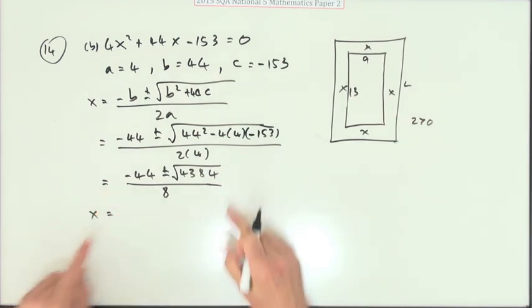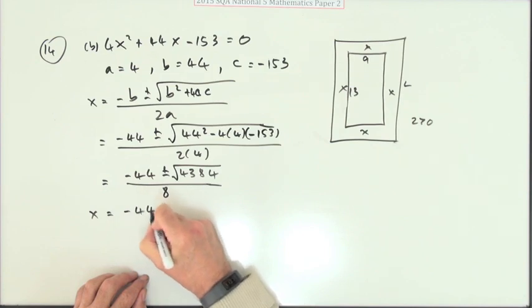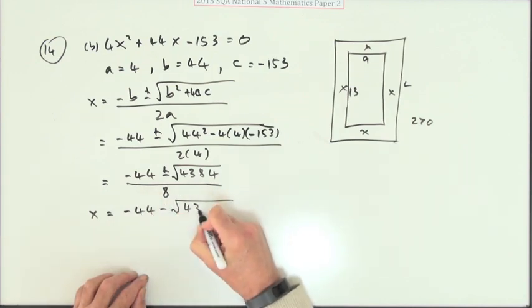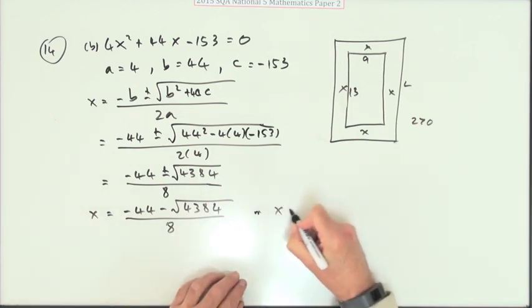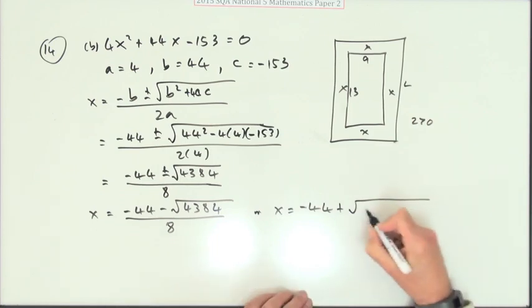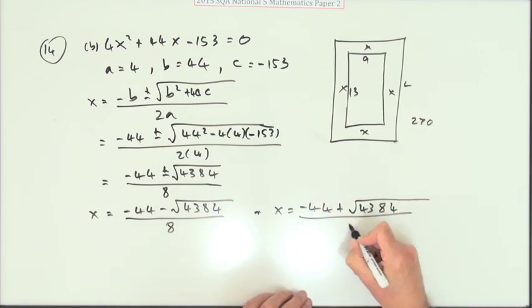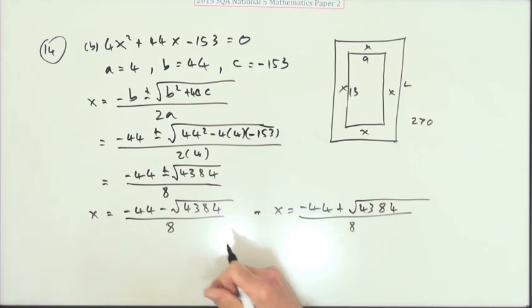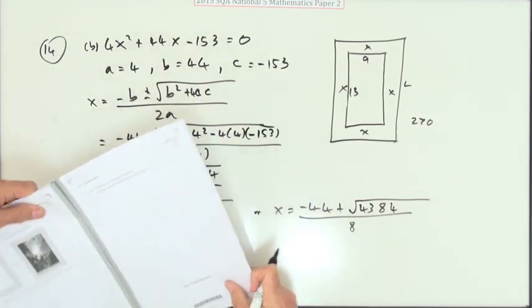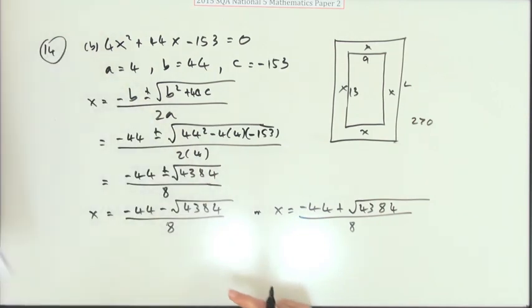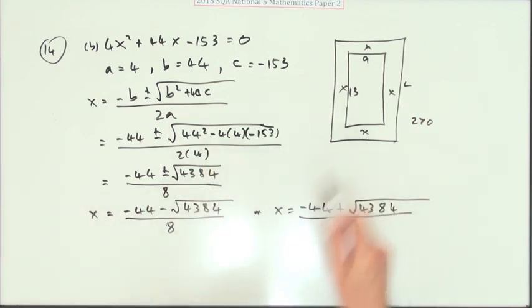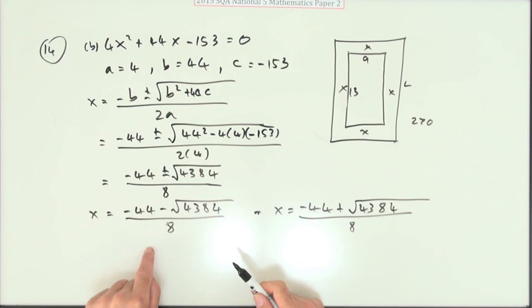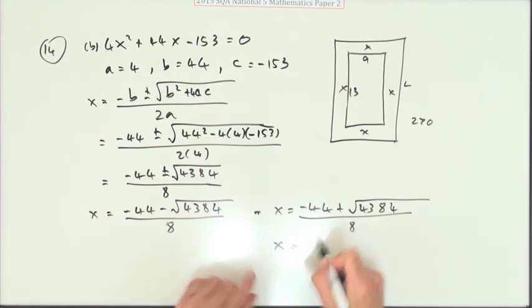Which means for X, I've got two answers. I've got negative 44 minus 4384 over 8. Or I've got X equals negative 44 plus the square root of 4384 over 8. But the question says, oops, I'm a bit lazy. It just says, what's the width of the border? So it can't be this. Because that's obviously going to be a negative number. It's a negative take away a negative. That's a negative number. X can't be negative. So that would be rejected. So really, it has to be this.